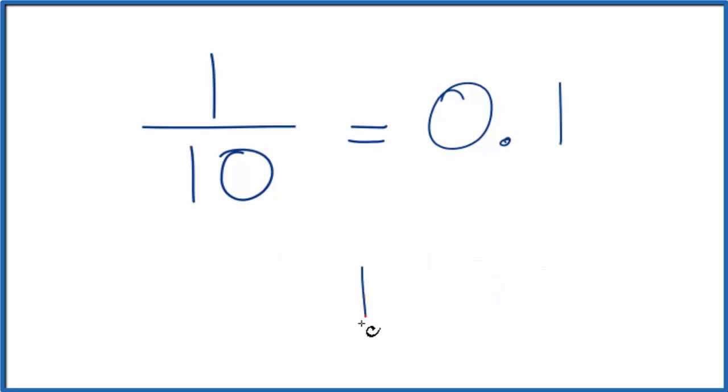So we have one, and we want to know how many times ten goes into one. Ten doesn't fit into one, so we're going to have to put zero and a point here. So now we can add a zero here. Ten goes into ten one time.